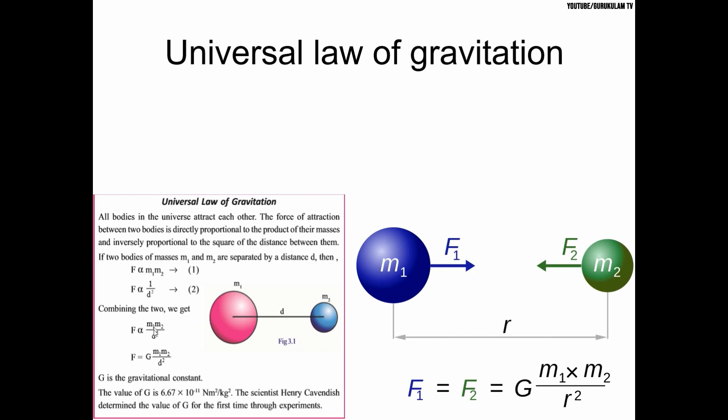We will combine these conditions. Force is directly proportional to m₁m₂ by d squared. This is proportional. We multiply the constant. Force equals G times m₁m₂ by d squared. The value of G is 6.67 × 10⁻¹¹ Nm² per kg².